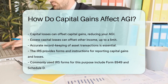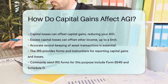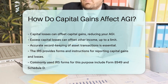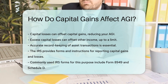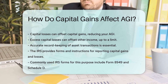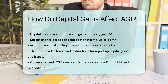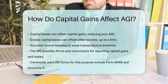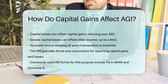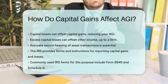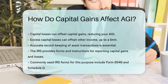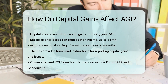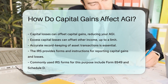It is essential to keep accurate records of your asset transactions. This helps ensure you correctly report your capital gains and losses. The IRS provides forms and instructions for reporting these transactions. Form 8949 and Schedule D are commonly used for this purpose.